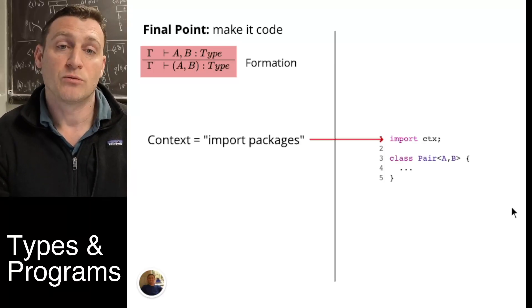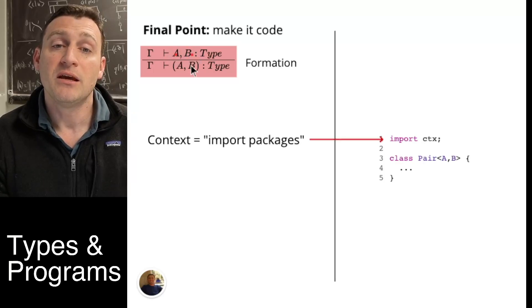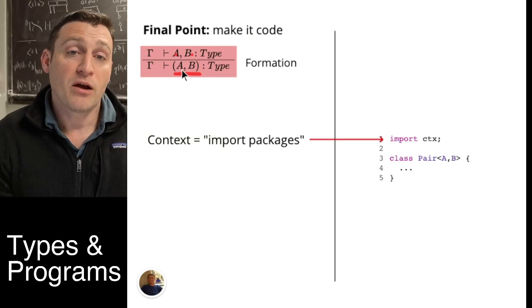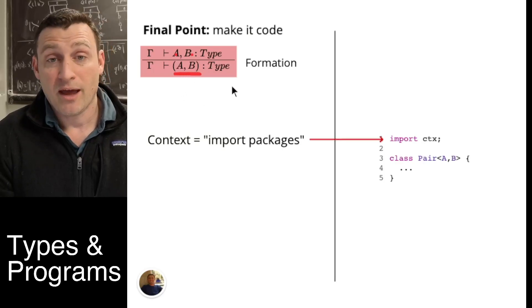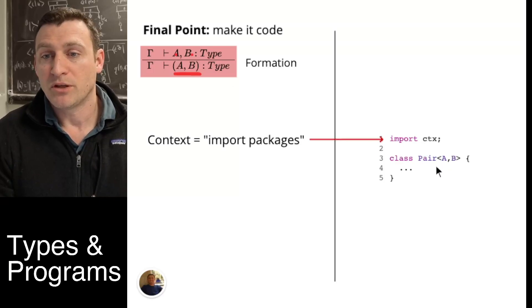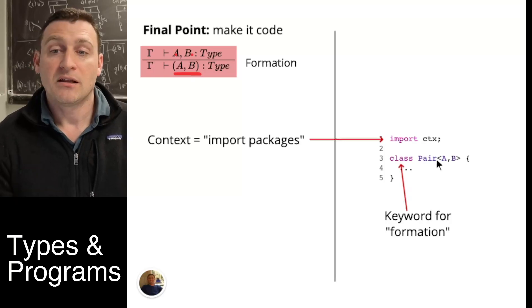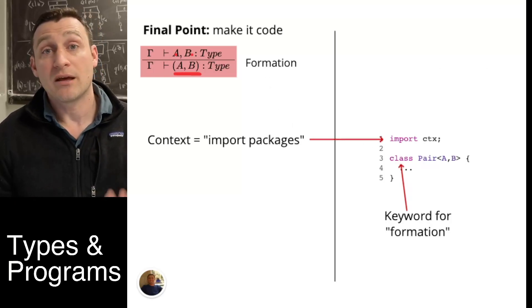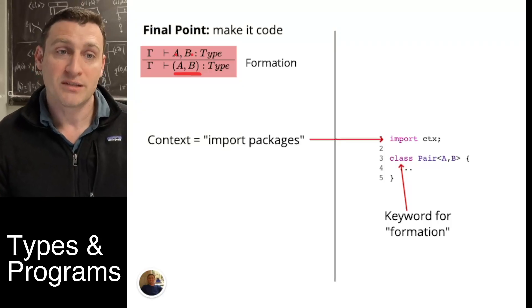The ones that are explicit context, we bother to list usually at the top of our program as part of the header. So what do we need to add? The rest of the formation rule is about combining two given types of data, A and B, and producing an A comma B. Now programming languages prefer that we not use A comma B in this silly way. They want us to name our data types. So we'll simply use pair for the name and we combine them with A comma B. Class is just a keyword for formation. It's just Java's way of telling us that we're at the formation step of our data type.